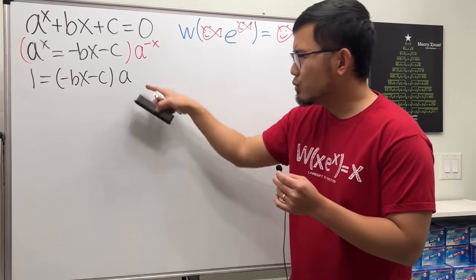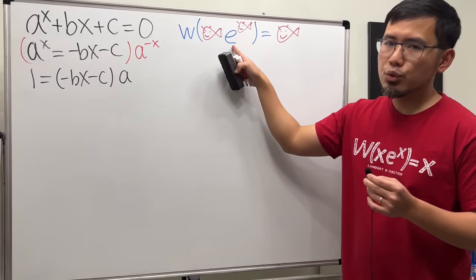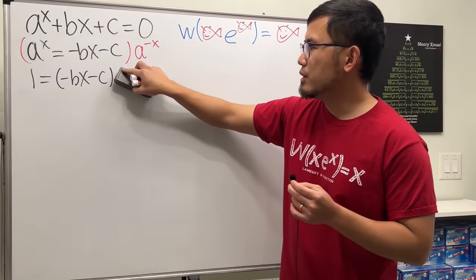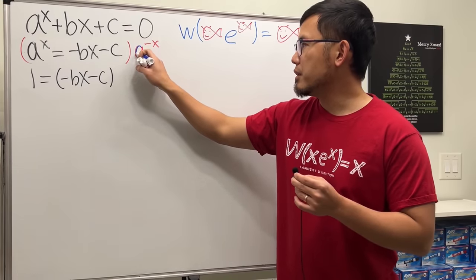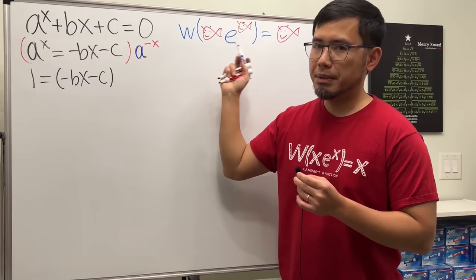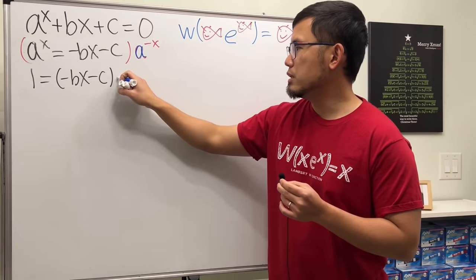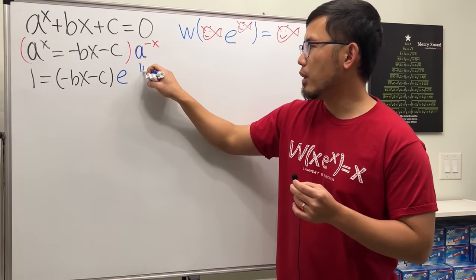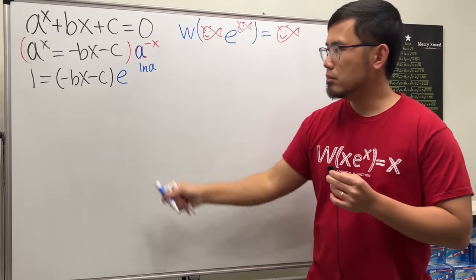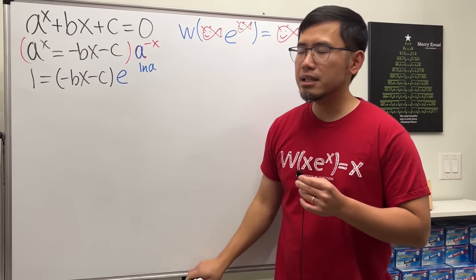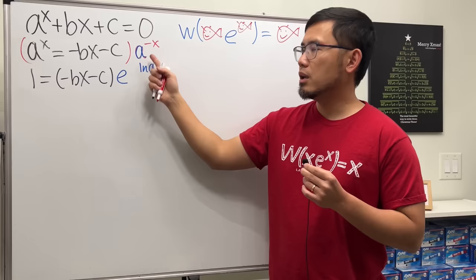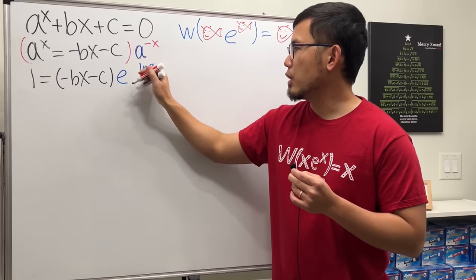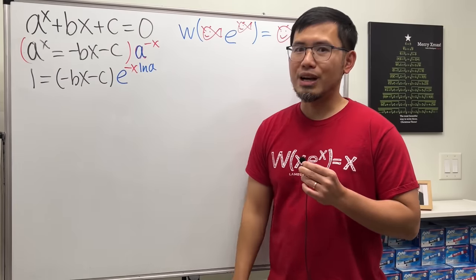But I don't want to write down a because I want to have the e, right? So what can we do? Well, for this a right here, let's rewrite it with base e. And to do so, it's just e raised to the ln a's power. They cancel. We get the a back. And of course, we have to raise this to the negative x power. We just multiply the powers. So I will put that down right here. And now that's what we have.